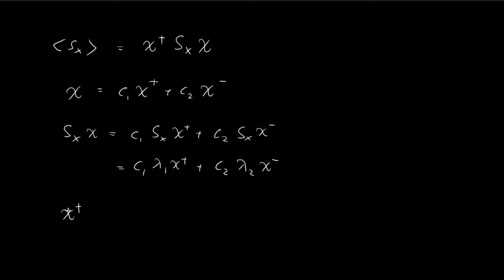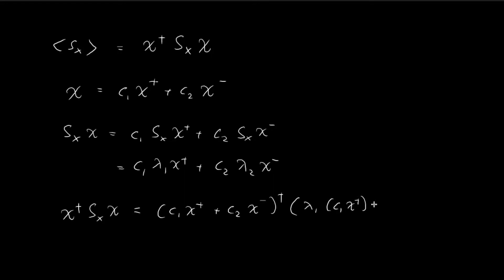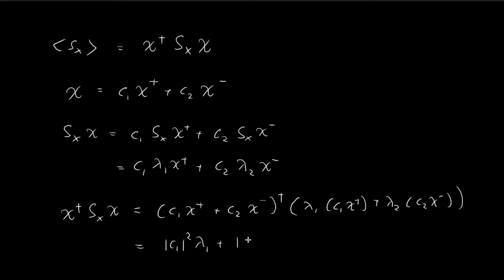So if we consider the Hermitian conjugate of the spinner multiplied by Sx applied to the spinner, we get C1, C2 (the conjugate row) multiplied by lambda1·C1·|spin-up⟩ plus lambda2·C2·|spin-down⟩. The cross-terms involving spin-down times spin-up are orthogonal, so they give zero. Since all eigenvectors are normalized, we get C1 squared times lambda1 plus C2 squared times lambda2, which is just the expected value formula.